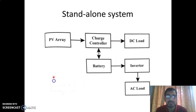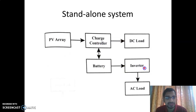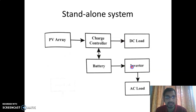The second classification is the standalone system. The main components of a standalone system are the PV array, charge controller, battery, and inverter. In this system there is no interconnection between the consumer or PV array and the utility grid — it is a standalone system.